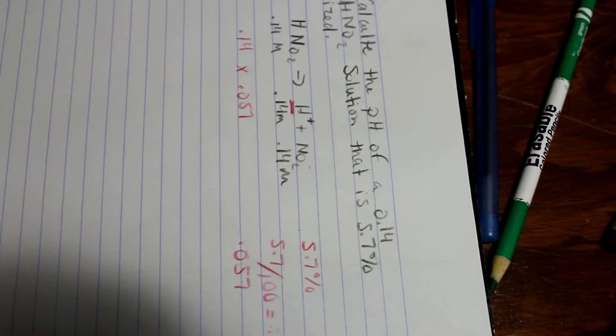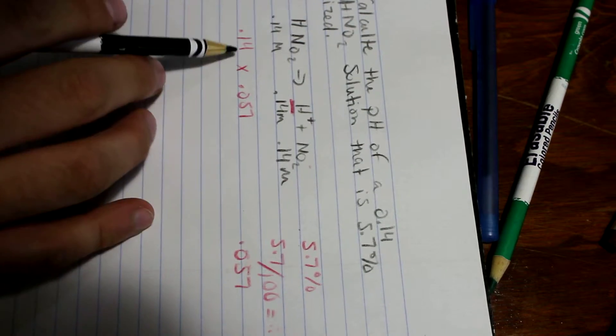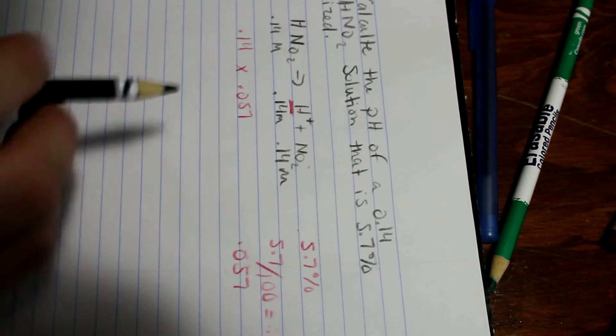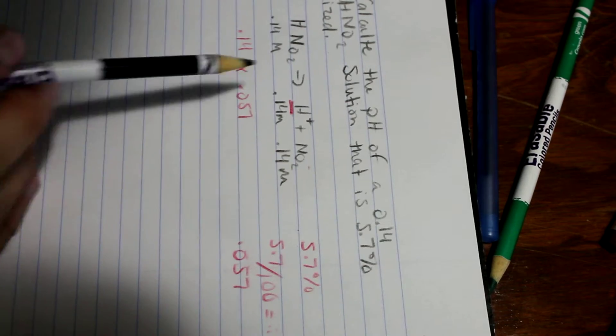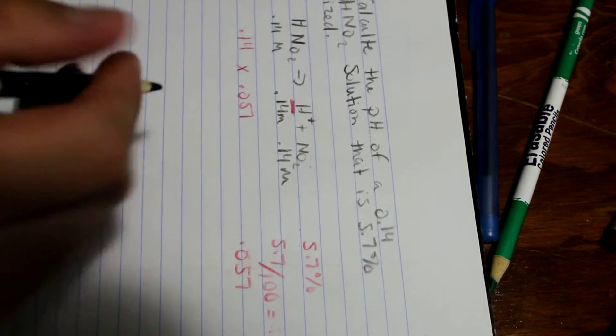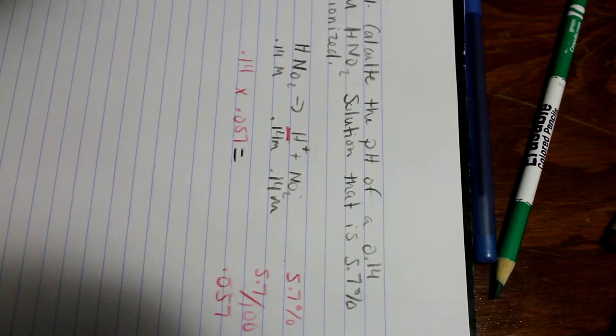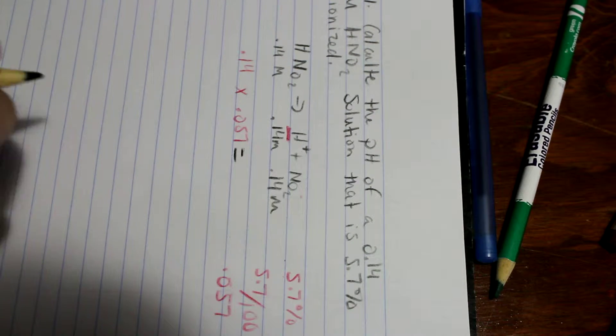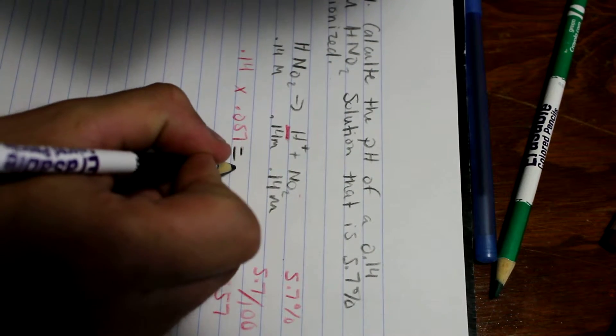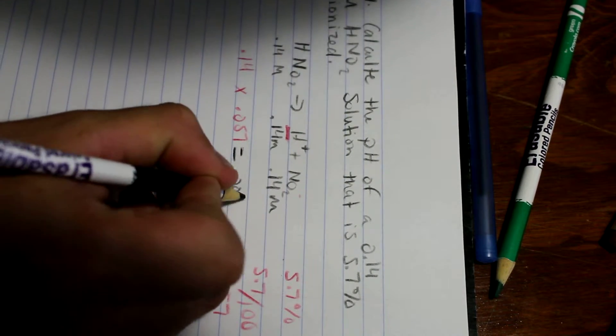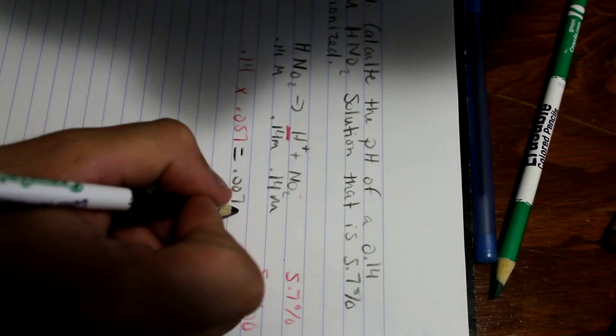We will multiply 0.14 molars by 0.057, because that's the percent that has been ionized, which gives us an answer of 0.00798.